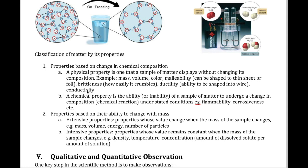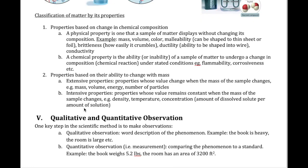Extensive and intensive properties describe how a property changes with mass. Extensive properties change as mass increases — for example, volume increases as mass increases. Energy is another extensive property: think about collisions between a bicycle and a car going at the same speed. The collision with the car transfers a lot more energy because it has a larger mass. So energy is proportional to the amount of mass. An intensive property is the opposite — its value doesn't depend on mass.